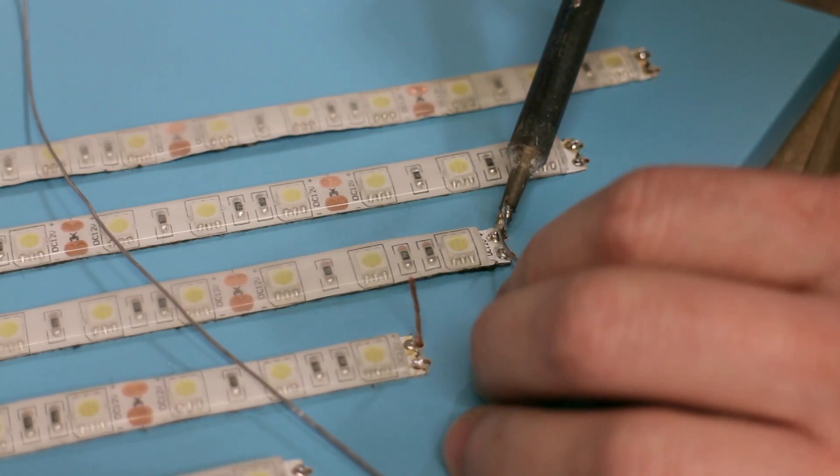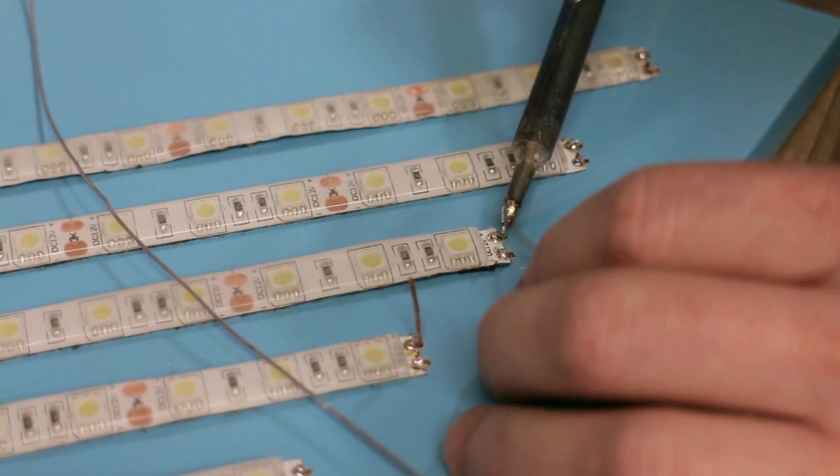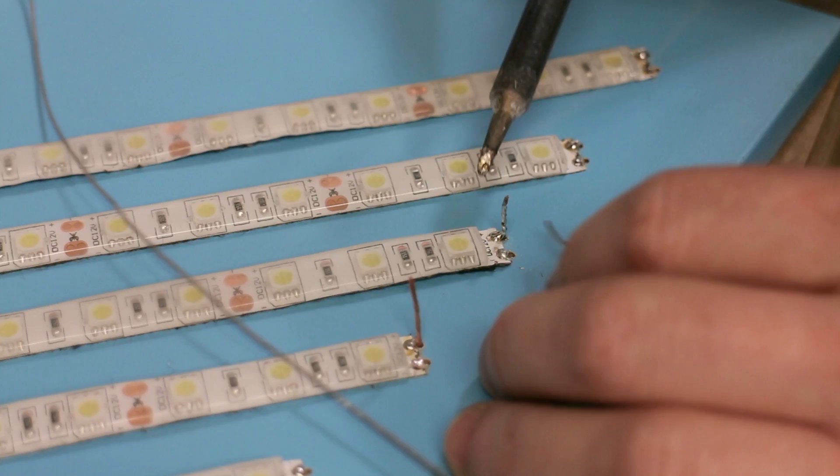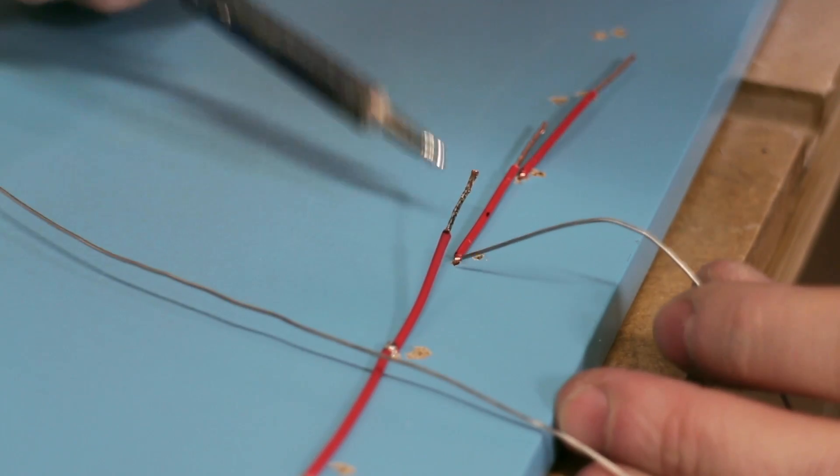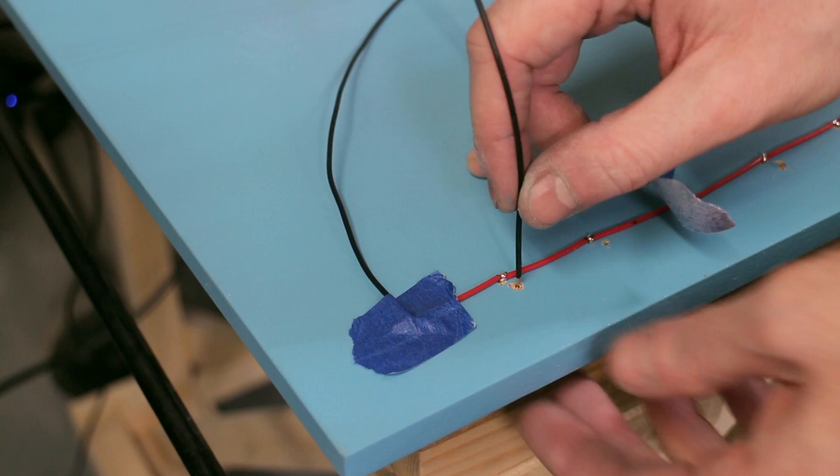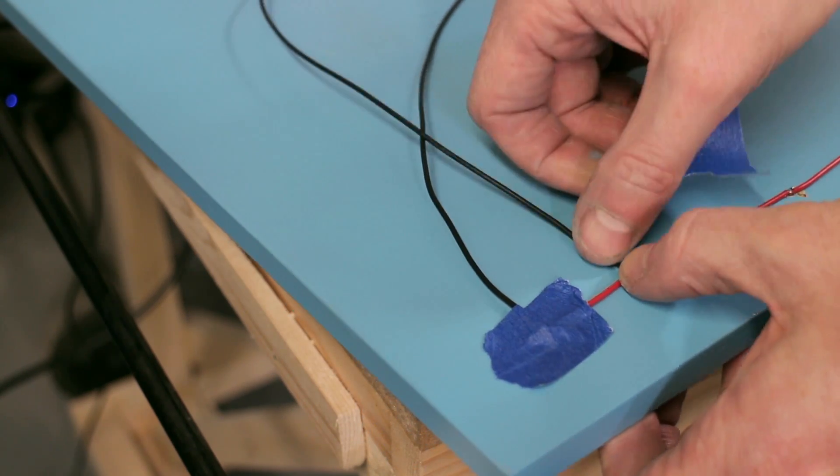These wires were then soldered in place to the light and were daisy-chained along the back. The positive wires in each were connected to a common run and the negative terminals were left floating, ready to connect to the controller.